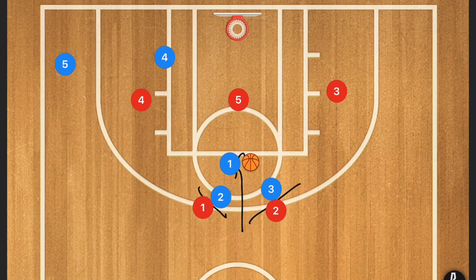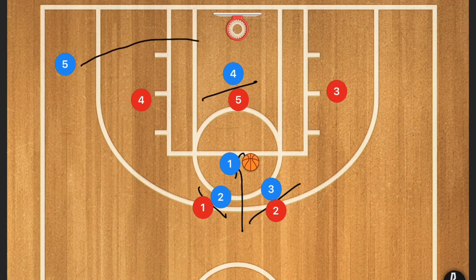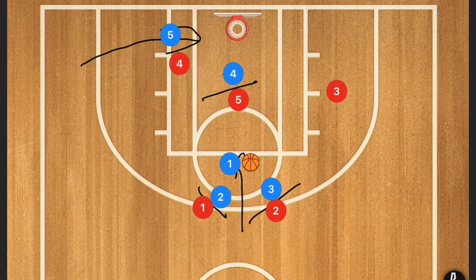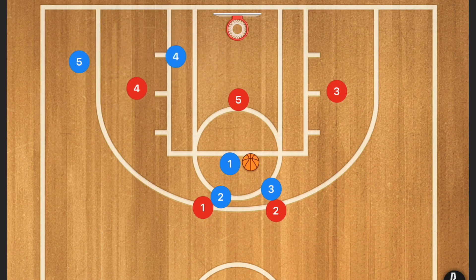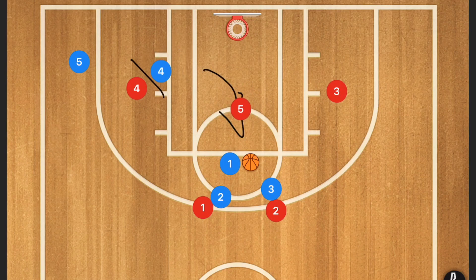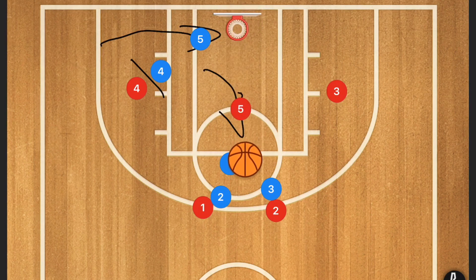Player one will attack down the middle, player four will set that back screen on the defender, and player five will blue-cut baseline. The issue is that player four's defender, if smart, will then guard player five down toward the post, closing that lane. However, player one could still take that shot. If you find that happening and want to keep running this play, when player five lifts up, set a screen for player four instead, and then have player five cut baseline again — now open for that layup or dunk.